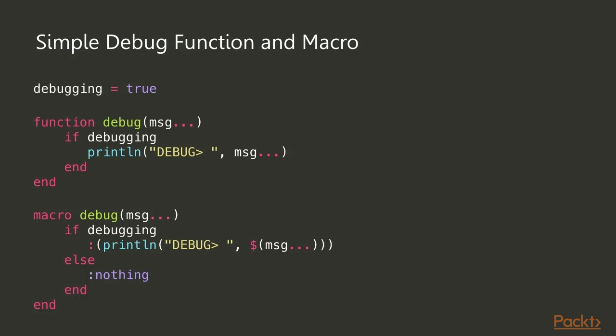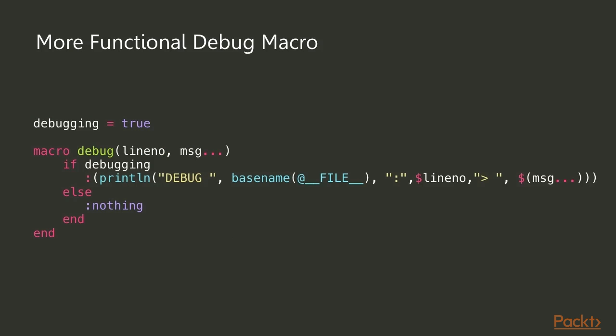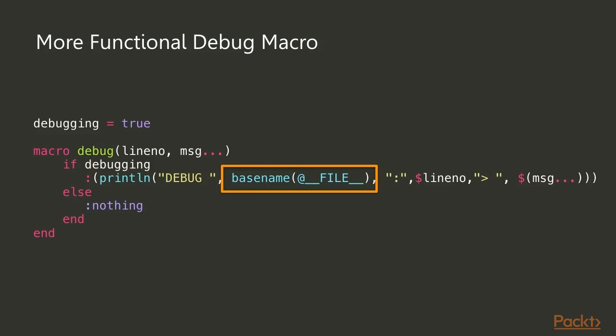What's nice with macros is that this code is inserted before the code is compiled. The macro takes the message, interpolates it into the quoted code, and if debugging is turned off, the macro simply produces nothing. So when the compiler later compiles the result of the macro expansion, there's no code — and no performance overhead. You can freely put your debug macro calls in your code and leave them there. In a slightly more advanced version, we take the line number and store it using interpolation, and with `__file__` we get the file name where the code is executing.